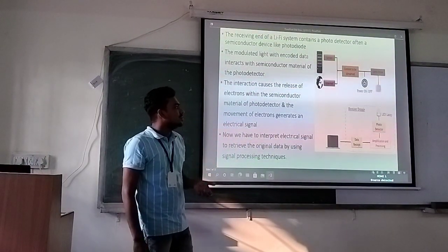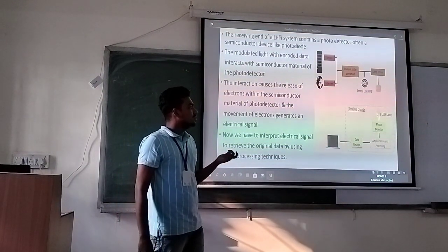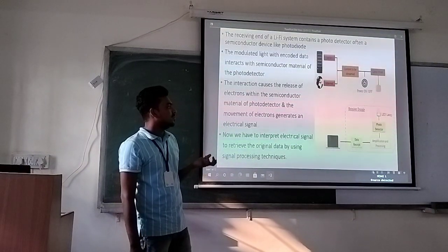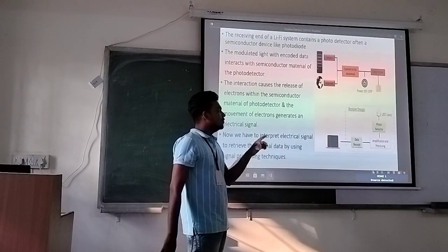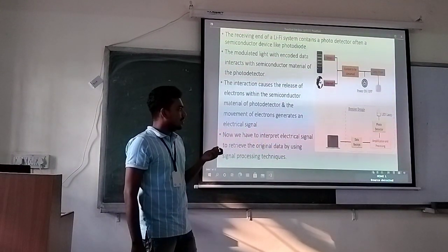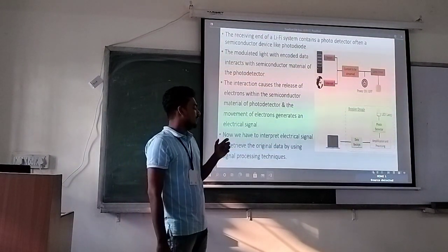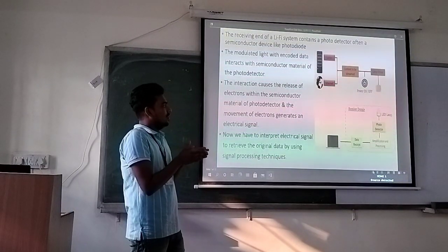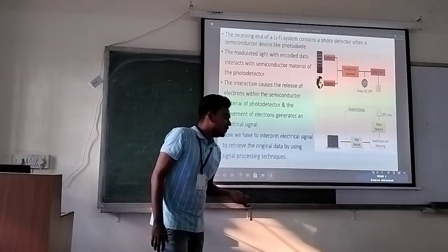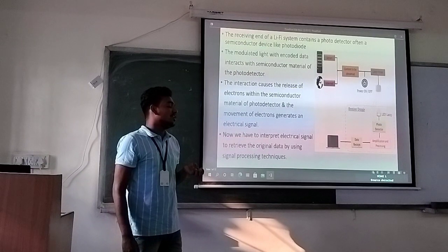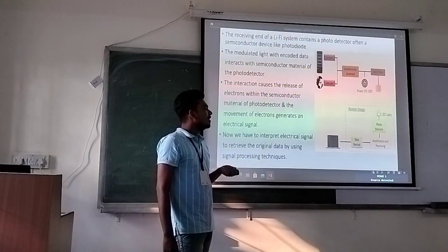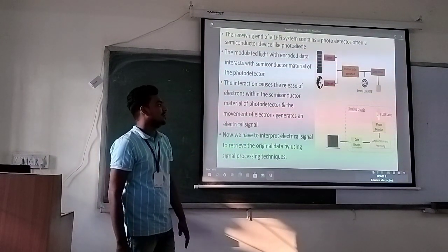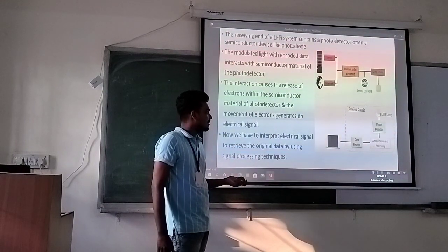On the receiver end, there is a photodetector — a semiconductor device that generates electrons when visible light falls on it. When the light falls on the photodetector, electrons are generated, and due to the movement of these electrons, an electrical signal is created which carries the decoded data. This signal is then amplified and processed by the signal processing unit, which consists of modulation circuits, demodulation circuits, a data processing unit, and an error correction unit. After amplifying and processing, the original data can be retrieved and reconstructed, and it becomes streamable using LiFi-enabled devices.